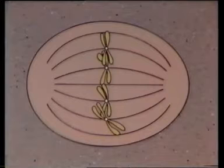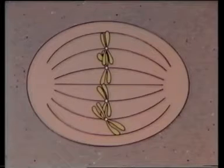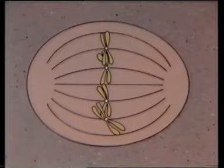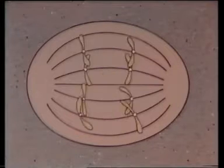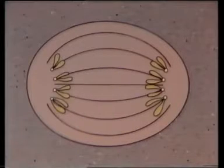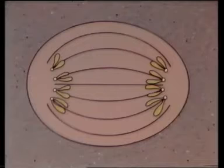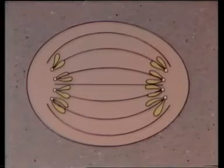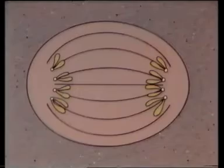During the third stage, anaphase, the chromatid pairs separate at the centromere and migrate to opposite poles of the spindle. Now that the paired chromatids have separated, each is referred to as a chromosome.